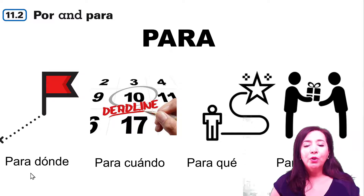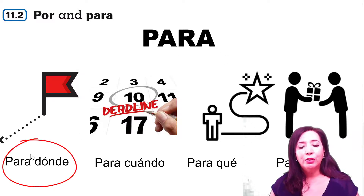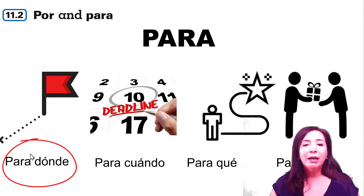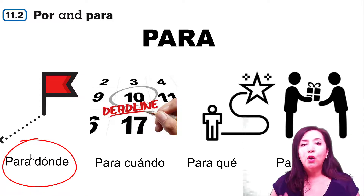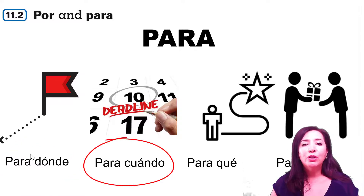Para — we use it if we're talking about the destination. Para donde vas? En la vacación, me gustaría ir para España — toward Spain. Para cuando es la composición? For when is the composition? It's due next week — es para la próxima semana.